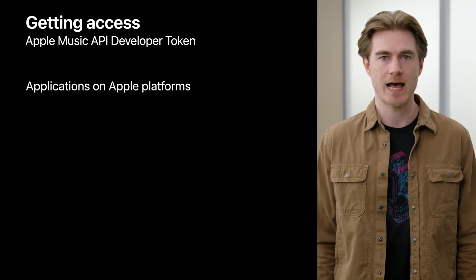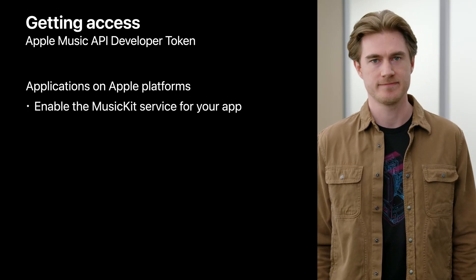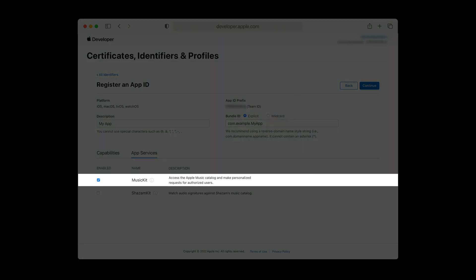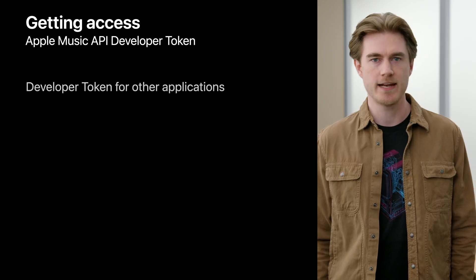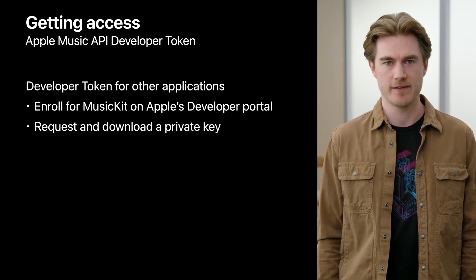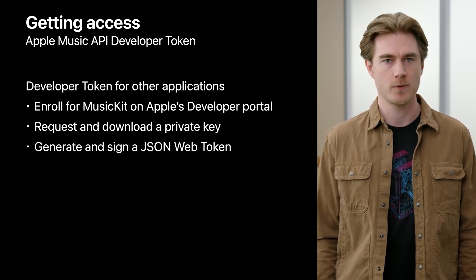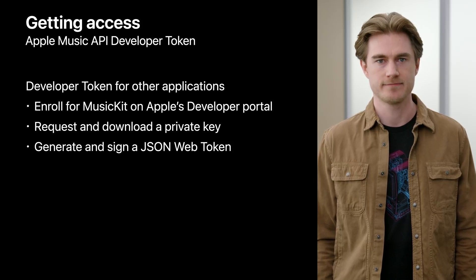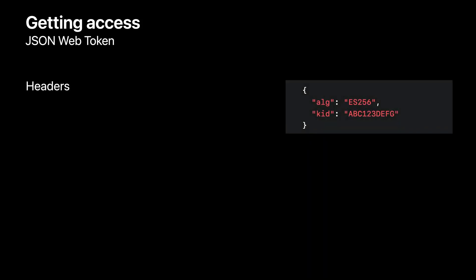To make requests to Apple Music API, you will need a developer token. For applications on Apple platforms, you can take advantage of automatic token management by enabling the MusicKit service for your app. This service can be found in the App ID section of the Apple Developer Portal. For applications on other platforms, you can obtain a developer token by enrolling as a MusicKit developer on the Apple Developer Portal. From there, you can request and download a private key. You will need to generate a JSON web token and sign it with your downloaded private key. A JSON web token is split in two parts. The first part is required headers, including the signing algorithm, ALG, which must be ES256, and the key identifier, KID, which is included as part of your private key download.